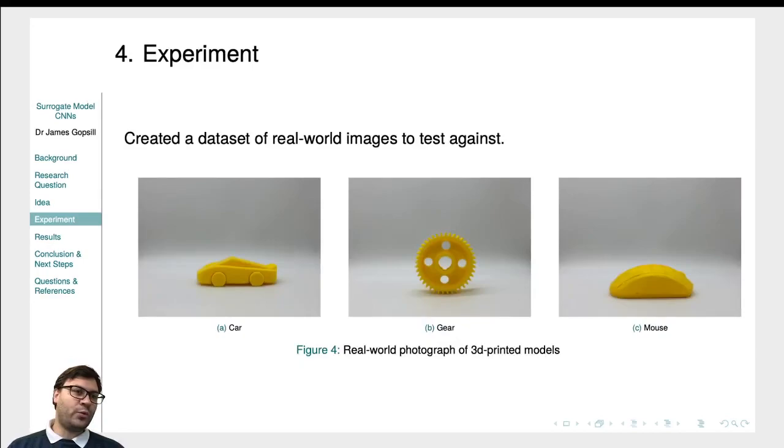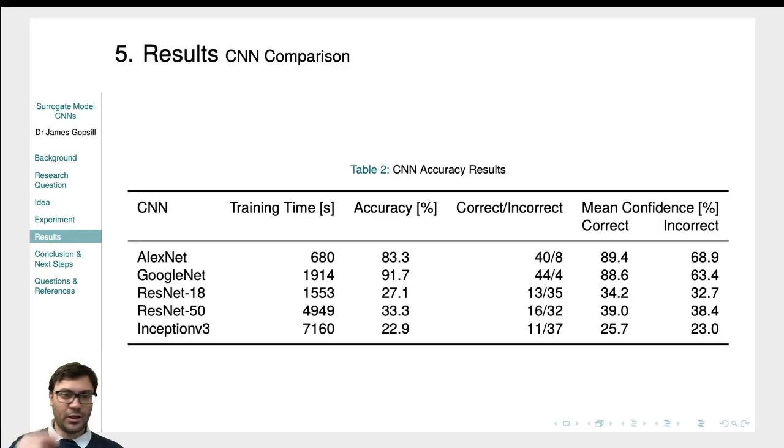We also created a dataset of real world images to test against. So we used a lightbox environment and mimicked the same environment that we used to render in Blender, the surrogate model ones. So we're looking to see if the CNNs can focus solely on the features of the models and not be perturbed by any noise of any background features in the scenery.